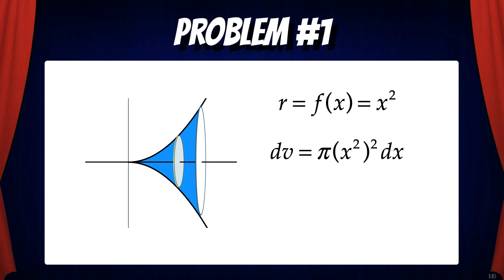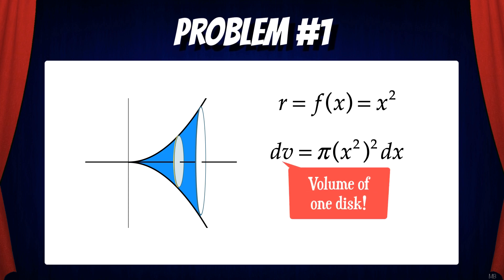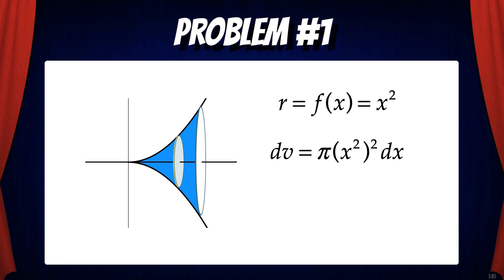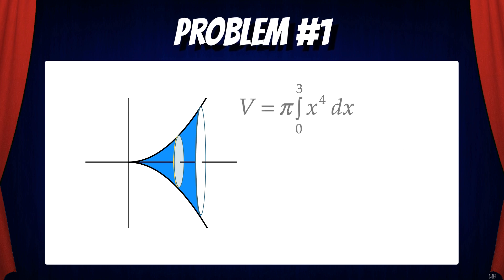That means dv equals π (x²)² dx. Remember, dv is the volume of one disk. So the volume of the entire solid is π times the integral from 0 to 3 of (x²)² dx, which simplifies to π times the integral from 0 to 3 of x⁴ dx. Now we can solve this using the fundamental theorem of calculus, giving us π x⁵ over 5 evaluated from 0 to 3.